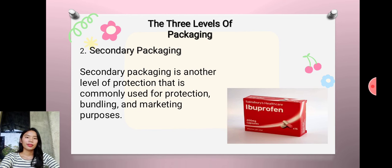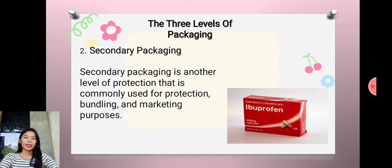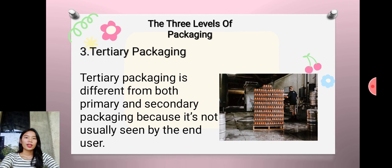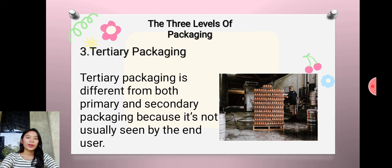The second is secondary packaging. Secondary packaging is another level of protection commonly used for protection, bundling, and marketing purposes. The last is tertiary packaging, which is different from both primary and secondary packaging because it is not usually seen by the end user.